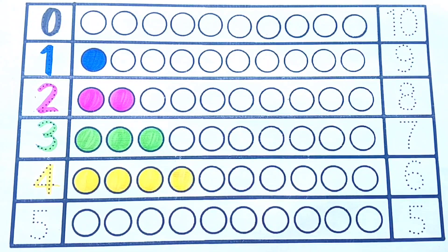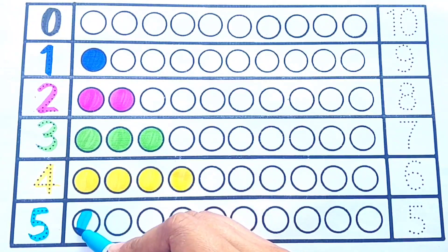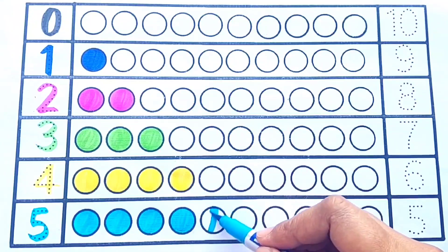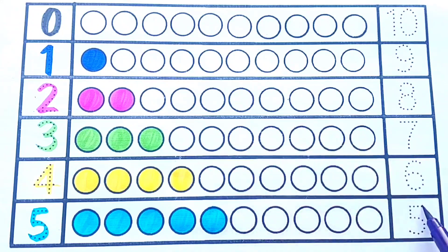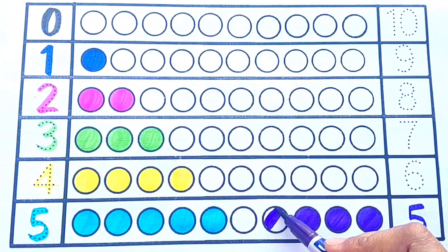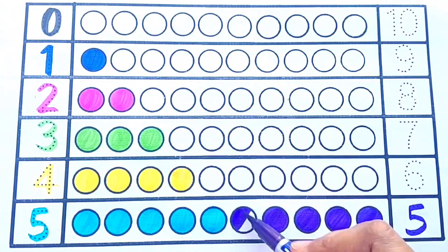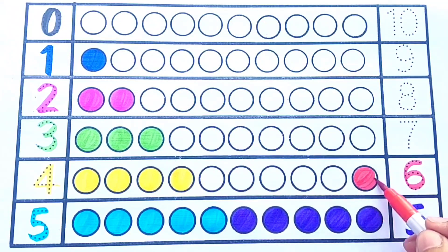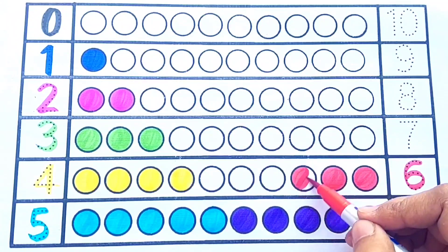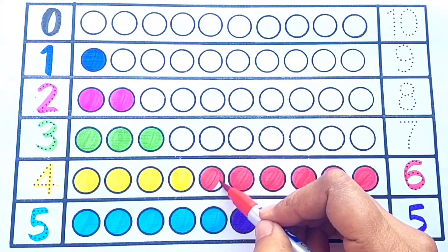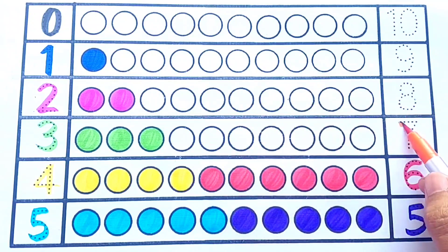4 circles. Sky blue color: 5. 1, 2, 3, 4, 5. 5 circles. Purple color: 5. Red color: 6. 1, 2, 3, 4, 5, 6. 6 circles. Orange color: 7.